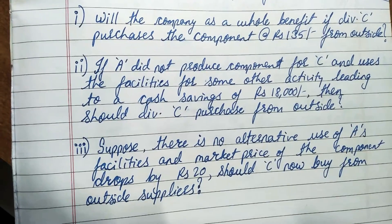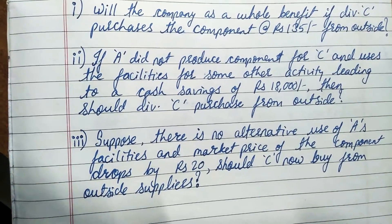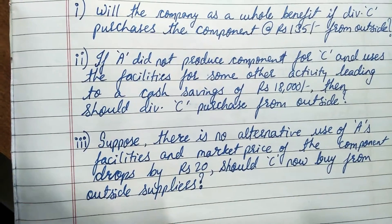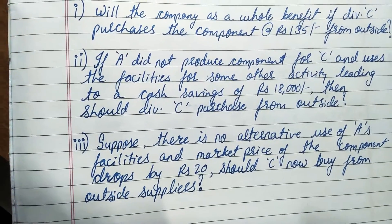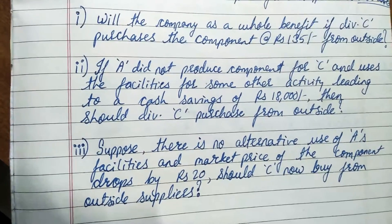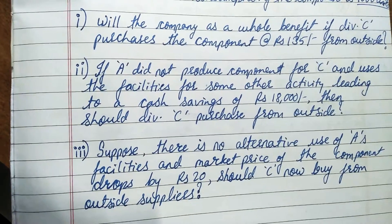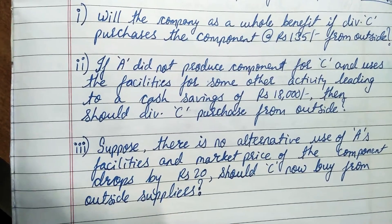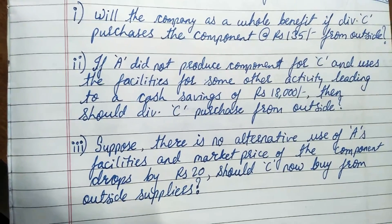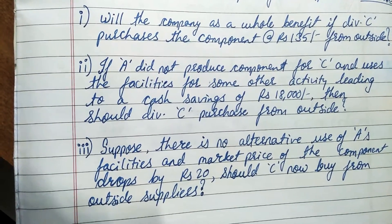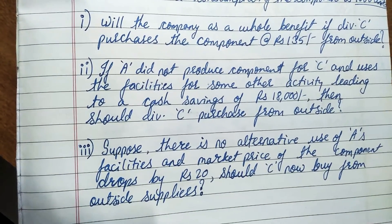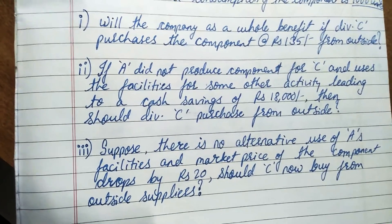Third scenario: suppose there is no alternative use of A's facilities, but the market price of the component drops by 20 percent. The 18,000 rupees option from scenario two is no longer available. So instead of 135, C is now getting the component at 115 rupees per unit. Should C now buy from outside suppliers? Will it be profitable for the whole organization?